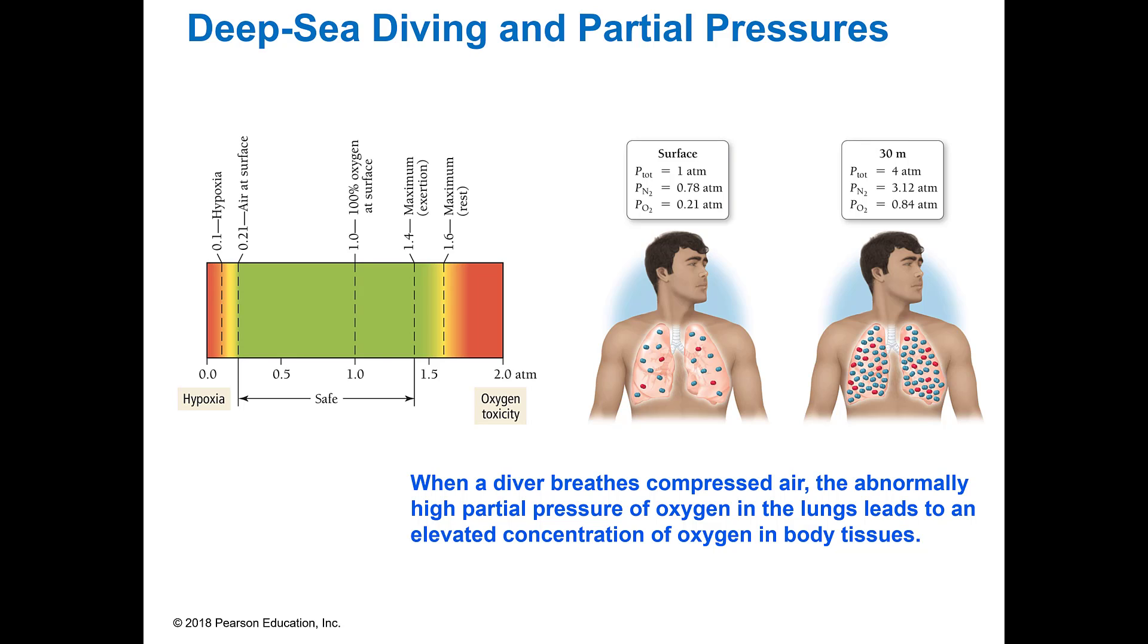We use partial pressures a lot when we're scuba diving because since a diver is using compressed air which is under high pressure, the partial pressure of oxygen in the lungs can lead to a higher level of oxygen in the tissue. The deeper you go, the more pressure there is. At the surface you may have a partial pressure of oxygen at 0.21, but when you get 30 meters down that could go up to 0.84 atmospheres. It's important that you understand how this works because you can have hypoxia, which is not enough oxygen, but you can also have oxygen toxicity where the oxygen can convert to free radicals and cause damage to your tissue.